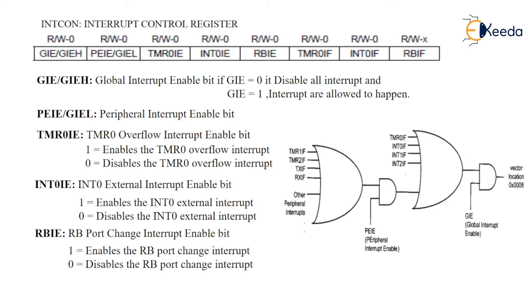When a positive edge trigger pulse is applied to RB0, INT0IF — the interrupt flag — is raised, forcing the PIC to jump to the interrupt vector location addressed in your program. After enabling the interrupt, the flag is raised and the PIC jumps to the vector address.